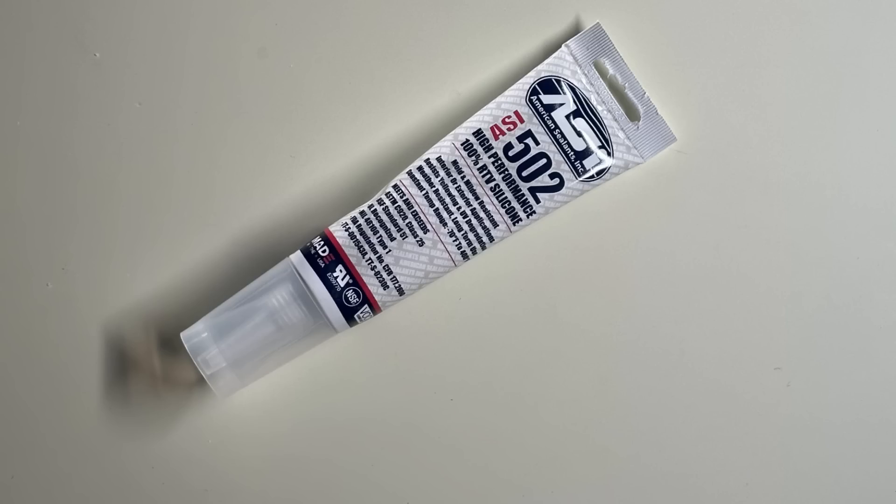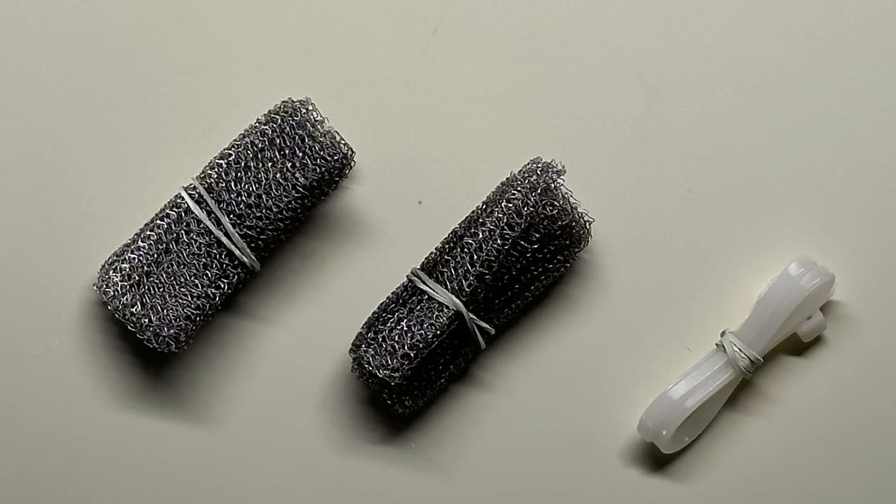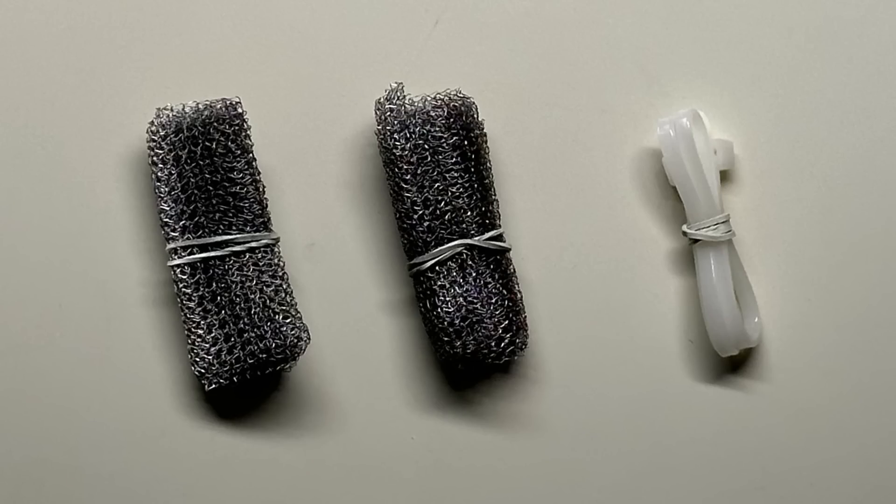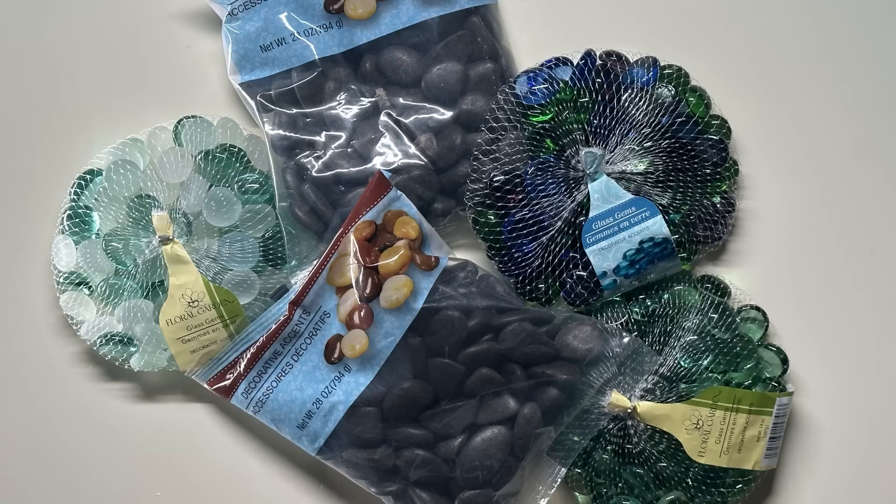power drill and a step drill bit that includes a half-inch option, food safe silicone sealant, fine mesh (we used a lint trap set for ours), sandpaper, and any stones or marbles that you can find.